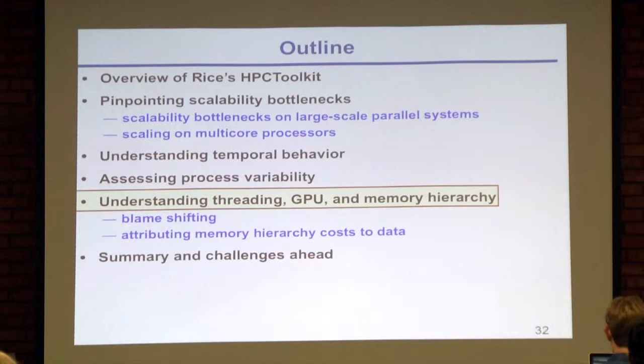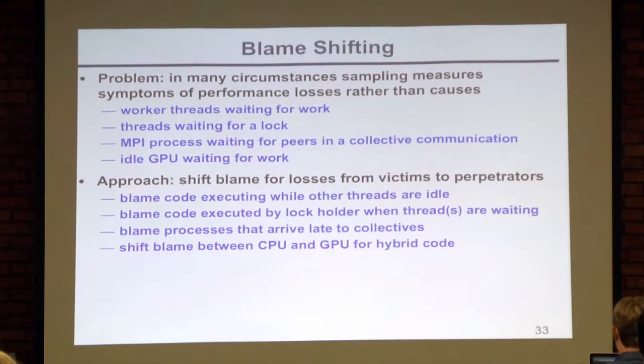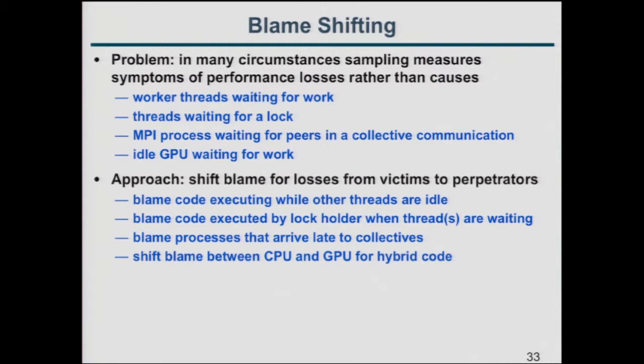We also have support for understanding threading, GPUs, and memory hierarchy. The problem is that with sampling you often measure symptoms: a thread spending a long time waiting for a lock is a symptom, but whoever's holding the lock is the cause. We want to shift blame from symptoms to causes — blame code executing when other threads are idle, blame the lock holder when threads are waiting, blame processes arriving late to collectives, or blame CPU code for not keeping the GPU busy.